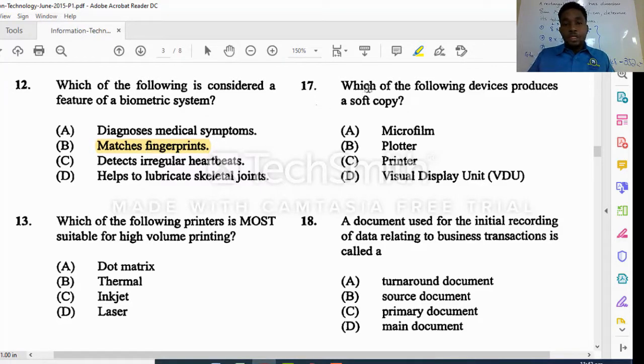Which of the following devices produces a soft copy. Microfilm is used for storage, plotter produces architectural drawing hard copy, printer produces hard copy. So a visual display unit, similar to a monitor or your phone screen, would produce soft copy.